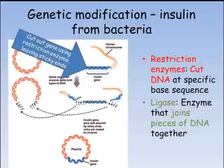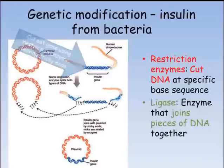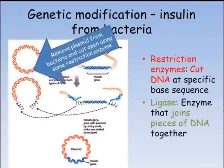Restriction enzymes cut DNA at specific base sequences, leaving sticky ends. Sticky ends are where one strand of a DNA overhangs the other. Because each restriction enzyme cuts at the same DNA sequence each time, it will always produce the same sticky ends. A plasmid is removed from a bacteria and cut using the same restriction enzyme that the gene was cut out with.